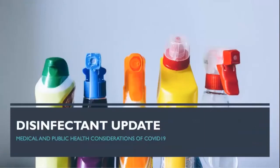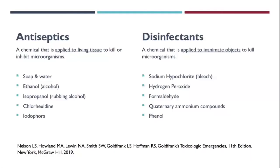We'll begin with a brief update regarding disinfectants. There are many chemicals used to kill microorganisms. One way to divide these chemicals is into disinfectants and antiseptics. Disinfectants are chemicals applied to inanimate objects only, used to kill microorganisms. Hypochlorite, which we'll discuss in some detail, is a representative disinfectant.